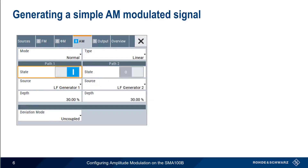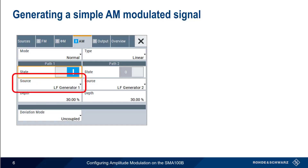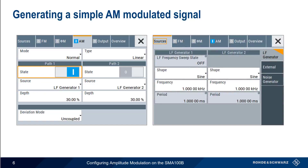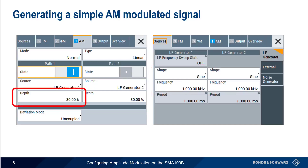If we want to generate a simple AM modulated signal, we can do this by enabling AM modulation and selecting LF generator 1 as our source. In this example, we'll leave the default LF generator setting of a 1 kHz sine wave. If needed, AM modulation depth can be configured as well. All that's left now is to turn on RF, and the SMA will be producing a basic AM modulated signal.